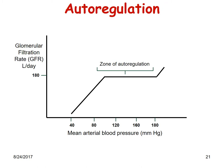This slide shows the comparison of mean arterial blood pressure and glomerular filtration rate. On the x-axis is mean arterial blood pressure; on the y-axis is GFR in liters per day. Within a certain range, autoregulation is maintained — this is called the zone of autoregulation, between 80 to 180 millimeters of mercury. Only when blood pressure goes beyond that range, or falls below 40 millimeters of mercury, does autoregulation fail, at which point the kidney may shut down.